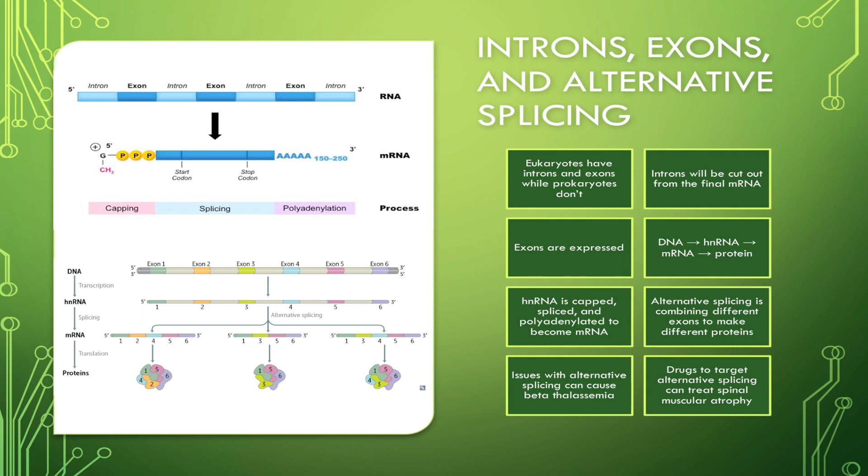You might be asking yourself now, why should you care about introns and exons, as well as splicing? Well, one disease that can occur if there are issues with splicing is beta thalassemia. In beta thalassemia, there can be a certain intron that is not removed, and so the intron, which is normally removed, is accidentally kept in.